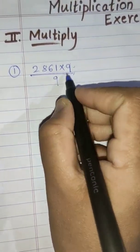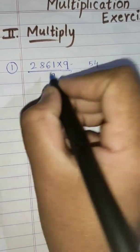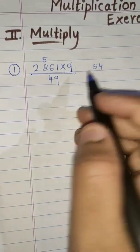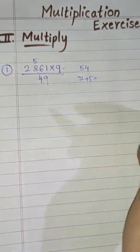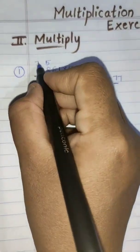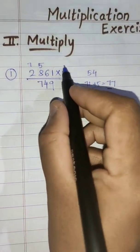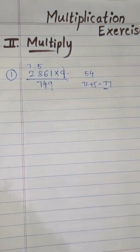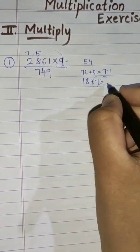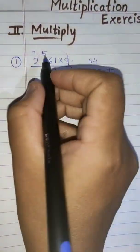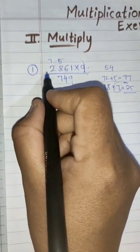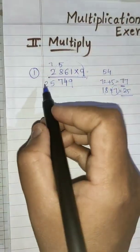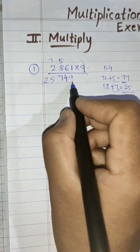9 ones are 9. 9 sixes are 54 — so I write 4 here, and the 5 carries over. Now 9 eights are 72, plus 5 is 77 — so I write 7 here, and the 7 carries over. Now 9 twos are 18, plus 7 is 25. Here there is no number left, so we write the whole number 25. The answer is 25,749.